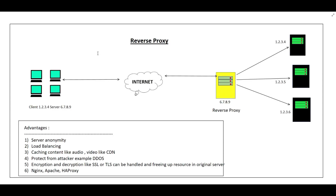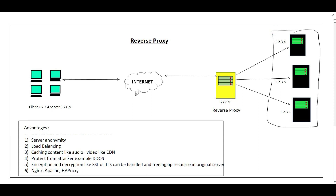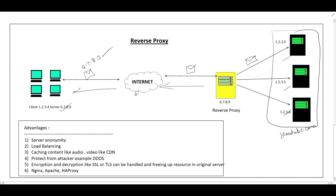Now let's look at the second type: the reverse proxy. Here we have a group of clients, and the clients know only the IP address of the reverse proxy — not the actual server IP addresses directly. We have a group of servers behind the reverse proxy. The reverse proxy address is, say, 6.7.8.9, which represents YouTube. When the client wants to access YouTube, the request comes to the reverse proxy at 6.7.8.9, which then transfers the request to whichever server can serve it, and returns the response back to the client.